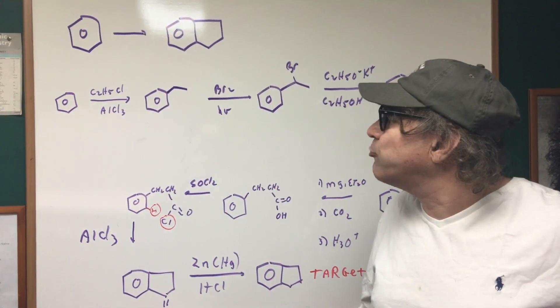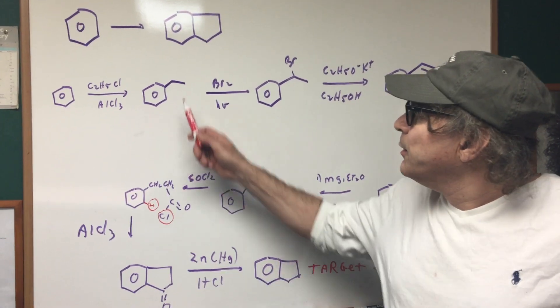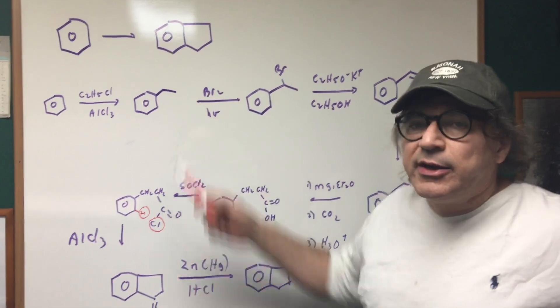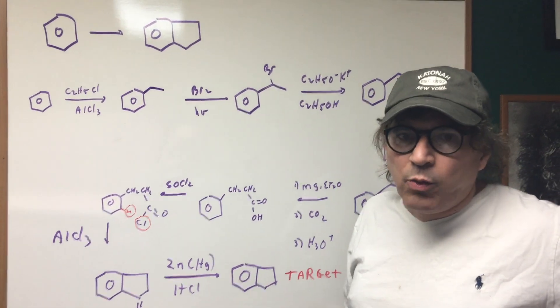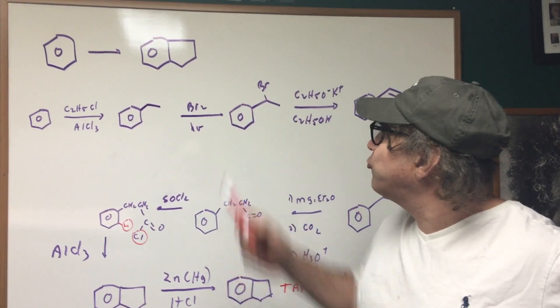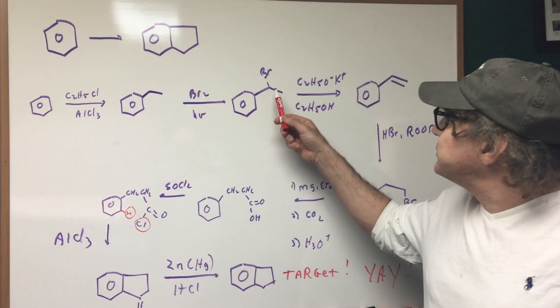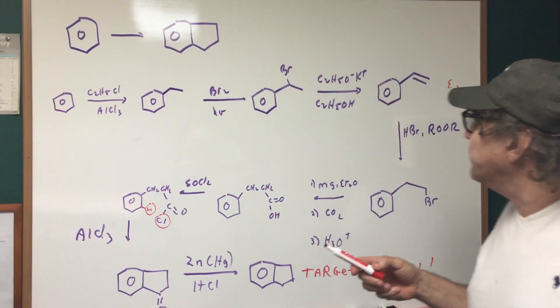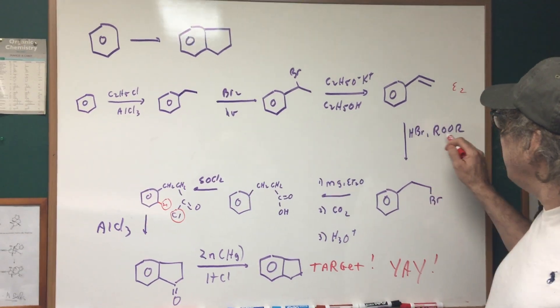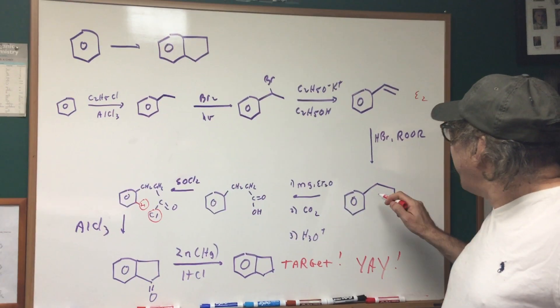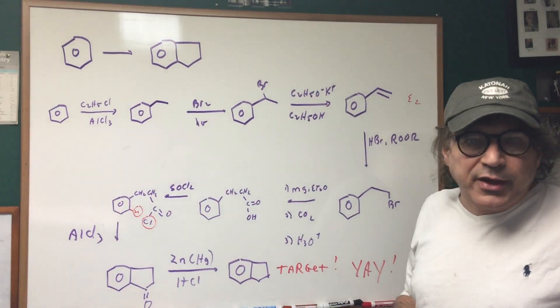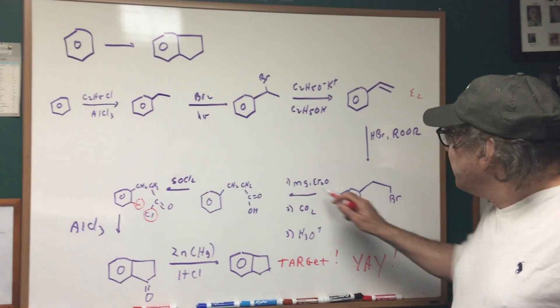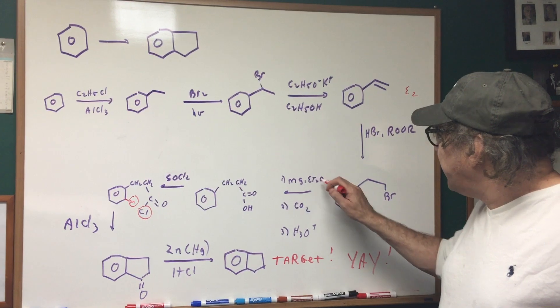I'm going to first do the Friedel-Craft reaction and put on an ethyl group. Then I added bromine and I did a side chain halogenation where I replaced the benzylic hydrogen with the bromine. Once I did that, I did an E2 reaction to get vinyl benzene. The next step was HBr and peroxide. That's going to be an anti-Markovnikov addition of bromine.